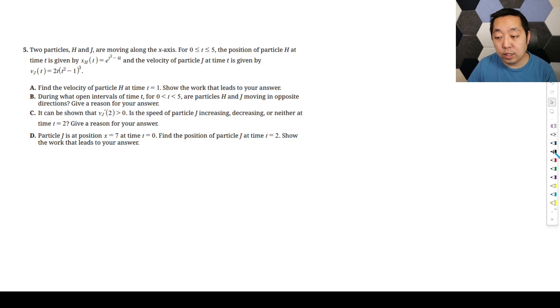Alright, so let's take a look at the AP Calculus AB FRQ number 5 from 2025. Two particles, h and j, are moving along the x-axis. The position of particle h is given by xh(t), and the velocity of particle j at time t is given by that.